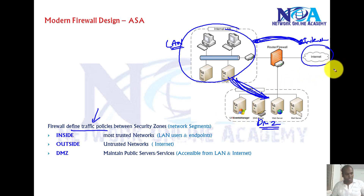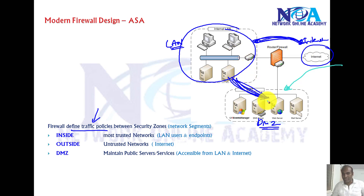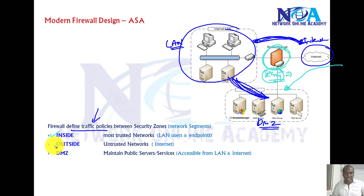You also want users sitting on the internet to be able to access your internal servers. This is all traffic moving from LAN to internet, LAN to DMZ, or from DMZ to internet — it all passes through the firewall. On the firewall we need to configure security policies. We have inside, outside, and DMZ interfaces — a common naming convention for each network, technically referred to as security zones or network segments.